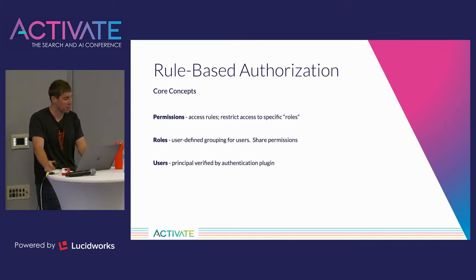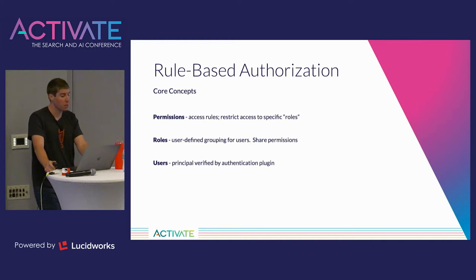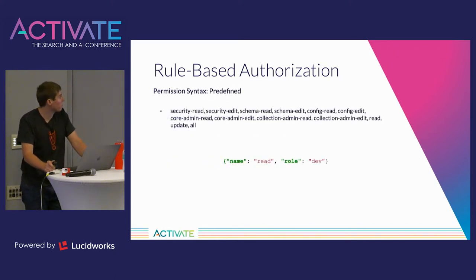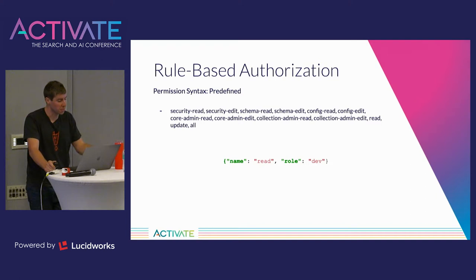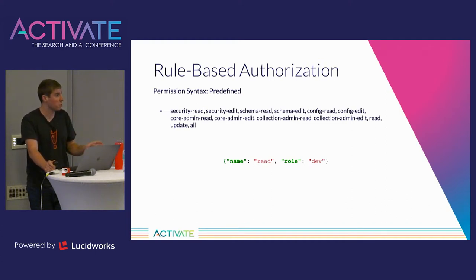Custom permissions are really flexible — they can be written to apply to specific collections, specific API paths, specific HTTP methods, or even request parameters. Each permission also lists the roles that can access that chunk of functionality, and each user has one or more roles. When a request comes into Solr, Solr finds the permission that applies, looks at the list of roles allowed by that permission, then checks whether the user's role lines up. To use a predefined permission, you just reference it by name in security.json — the name is not just a descriptor, it's syntactically important, which can cause confusion.